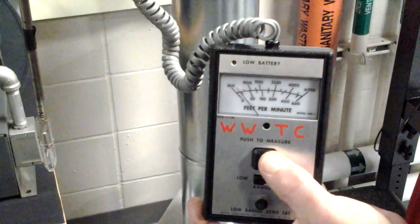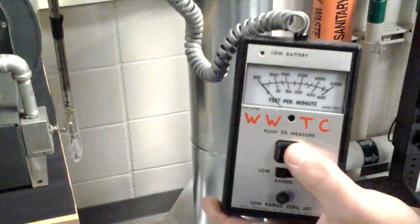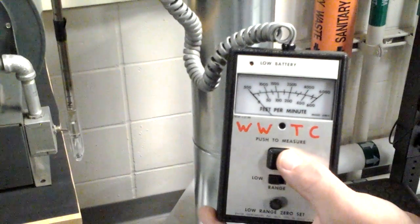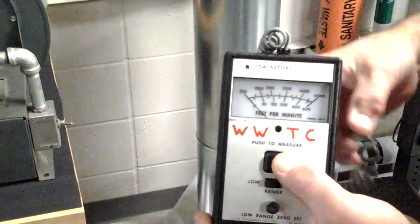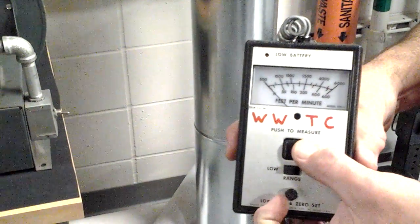Adjust the mechanical zero screw slot located just below the meter and position the pointer at 0 feet per minute, using the non-magnetic plastic adjustment tool provided.